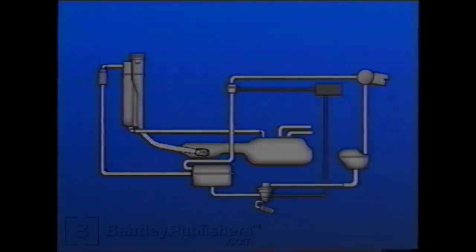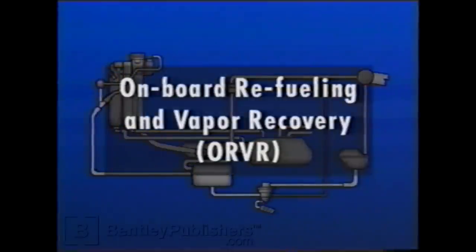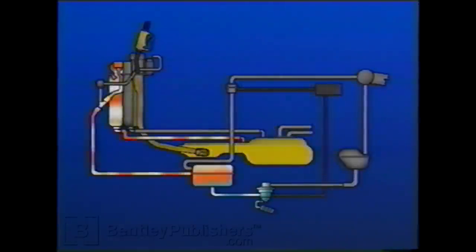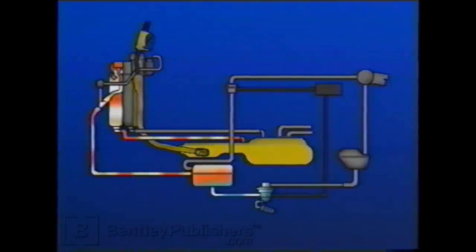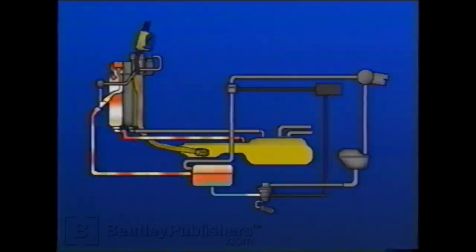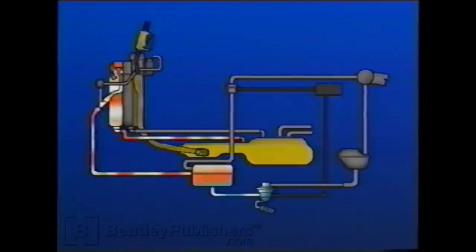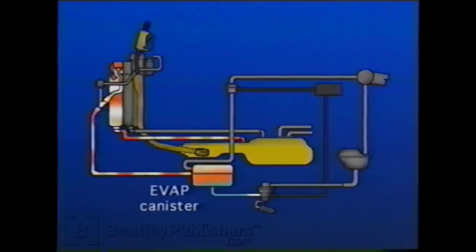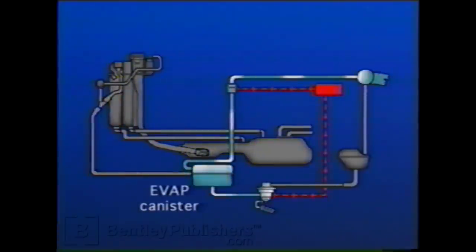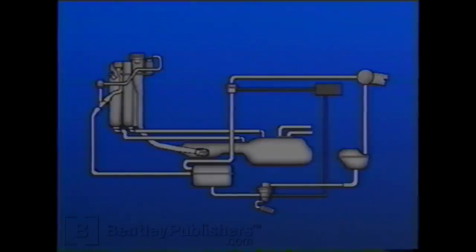Another recent addition to the EVAP system is Onboard Refueling and Vapor Recovery, or ORVR system. Even though the EVAP system was performing its function well, it had no capability to control the hydrocarbons escaping during refueling. The vapor return systems installed on gas pump nozzles have relatively little effect on the amount of vapor escaping. As a result, the ORVR system was created to minimize the hydrocarbons released during refueling. During ORVR operation, fuel vapor is stored in the EVAP canister and later routed to the engine to be burned.